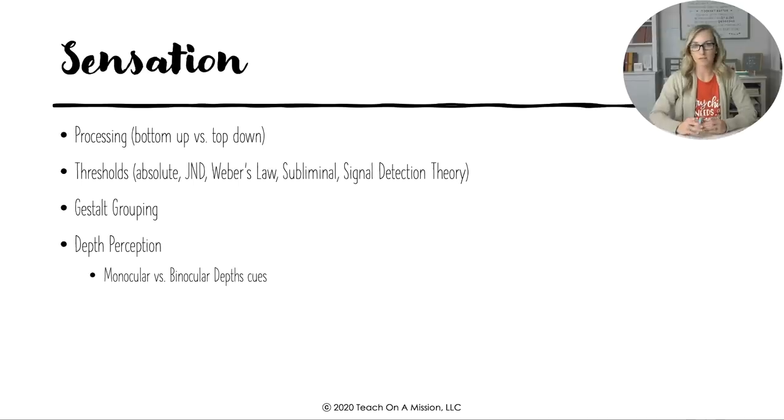Thresholds. There's lots of things to understand with thresholds. We have absolute ones, which means that they don't change, but it also means that we are able to detect a stimuli 50% of the time. And if we're able to do that, the stimulus has met our absolute threshold.